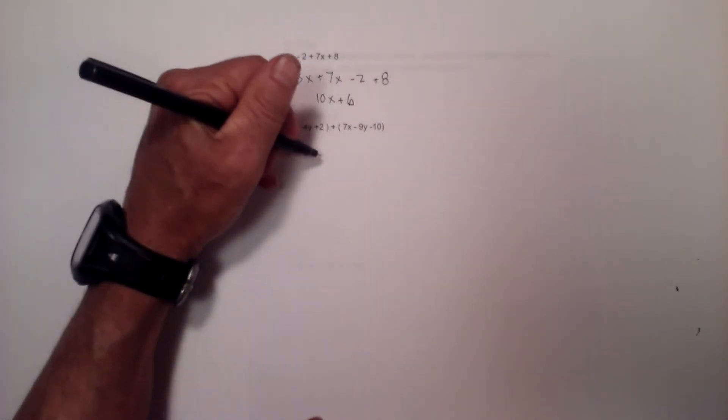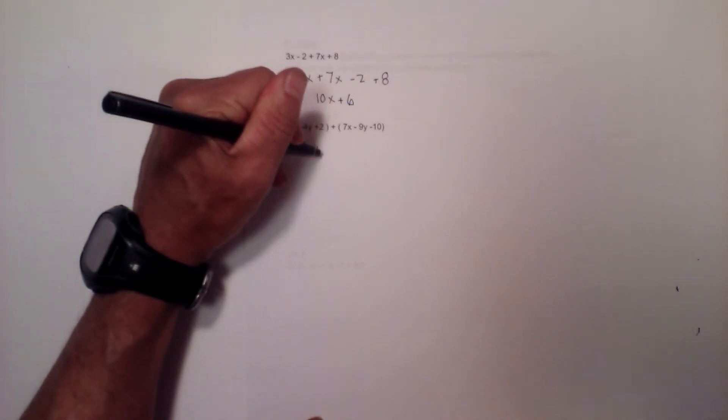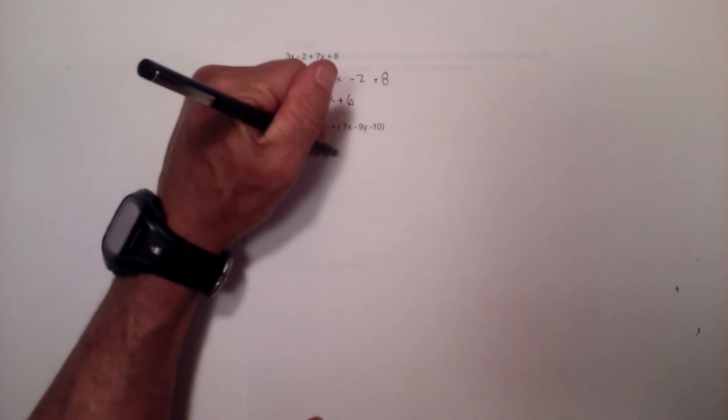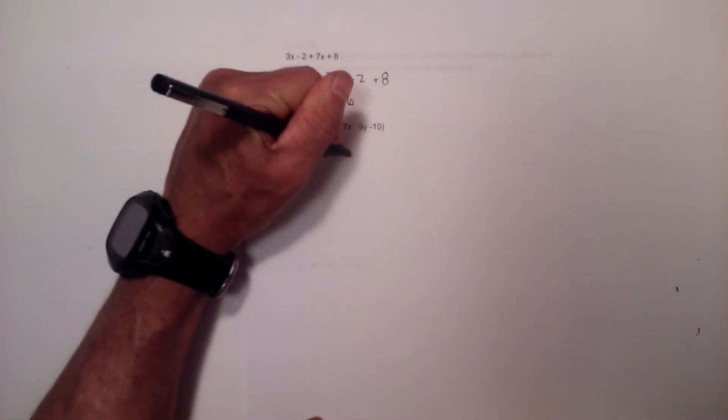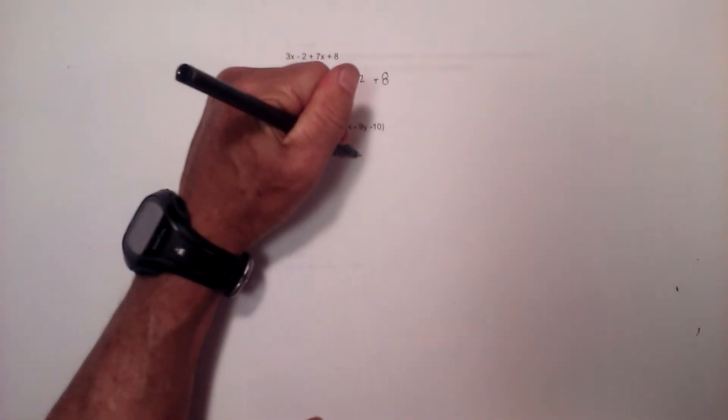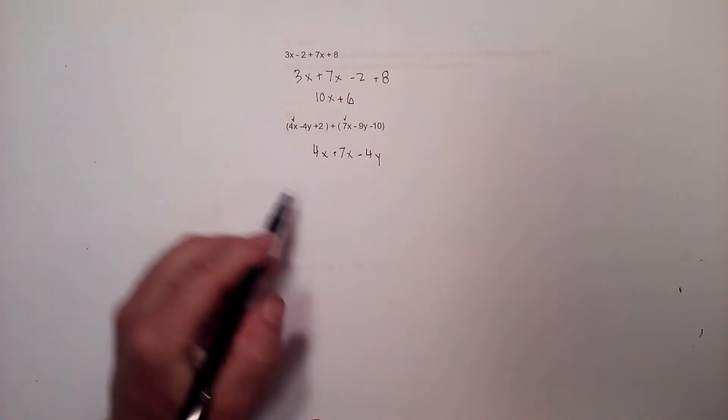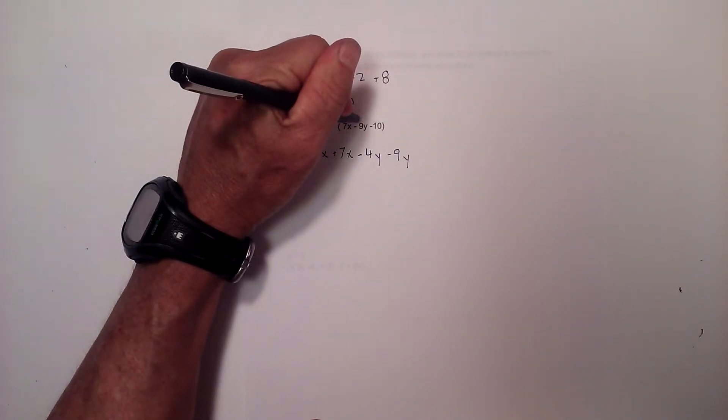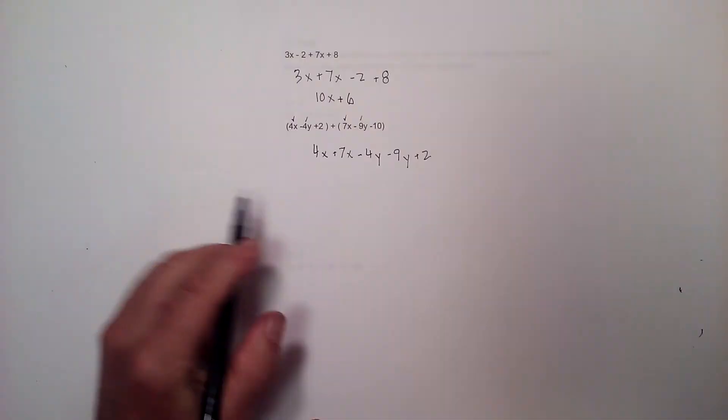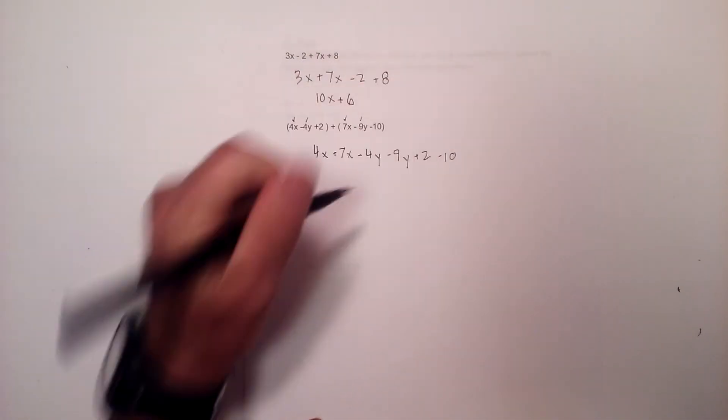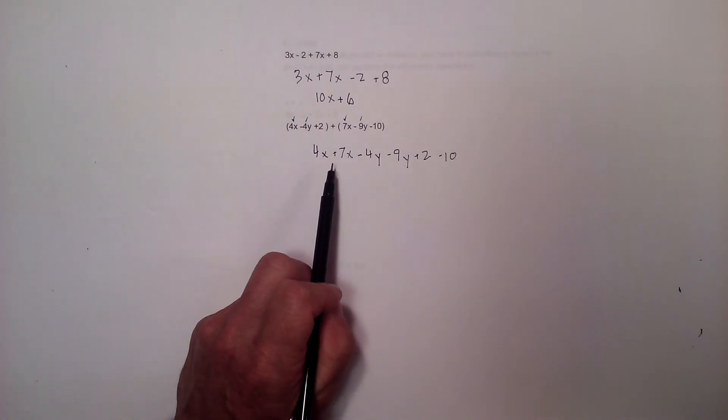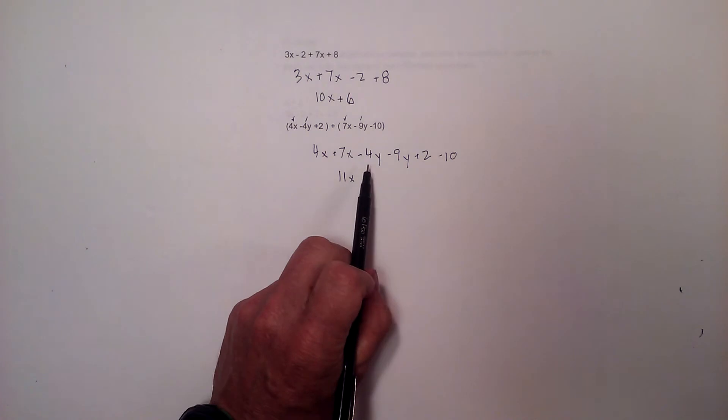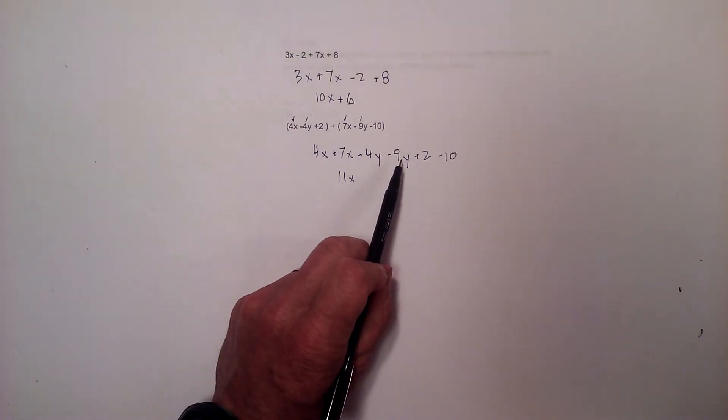Here's another example. I'm going to rewrite this and put like terms next to each other. I'll put a little mark above them because there are lots of terms going on. We have the y's: negative 4y and negative 9y. Then we have positive 2 and negative 10. Now I combine like terms: 7x + 4x is 11x.